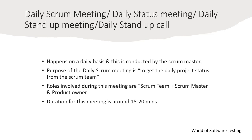The next ceremony is the daily scrum meeting, also called the daily status meeting, daily stand-up meeting, or daily stand-up call. This is the second meeting and happens on a daily basis, conducted by the scrum master. The purpose is to get the daily project status from the scrum team — how the team is progressing toward the sprint goals.